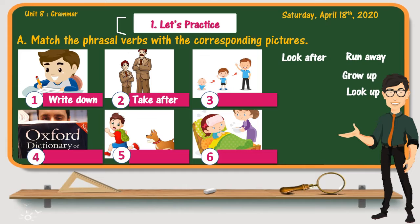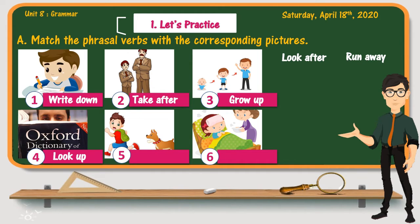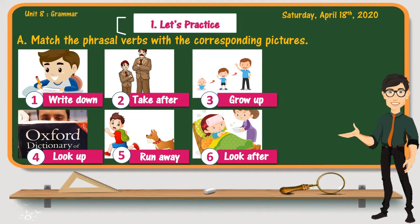Picture three is matched with the verb to grow up, which means to become older or bigger. Picture four is matched with the verb to look up, which means to search for a word or a piece of information in a book or a dictionary. Picture five — the matching verb is run away. And the last picture is matched with the verb to look after, which means to take care of someone.